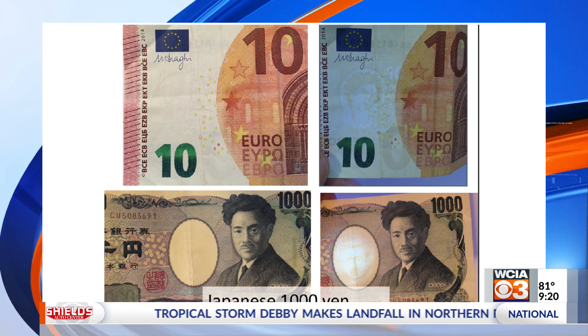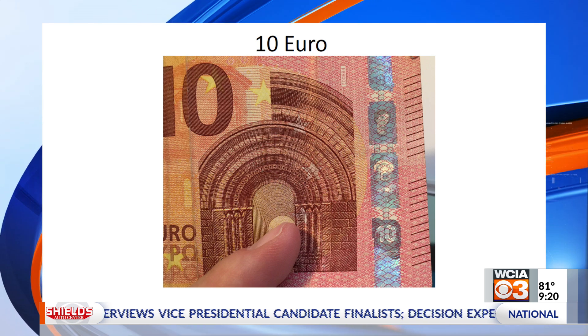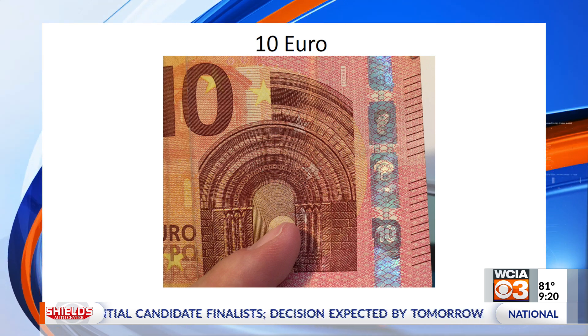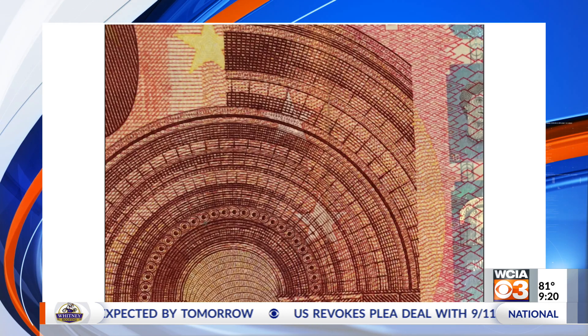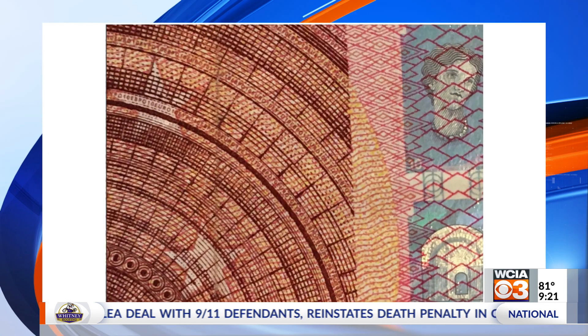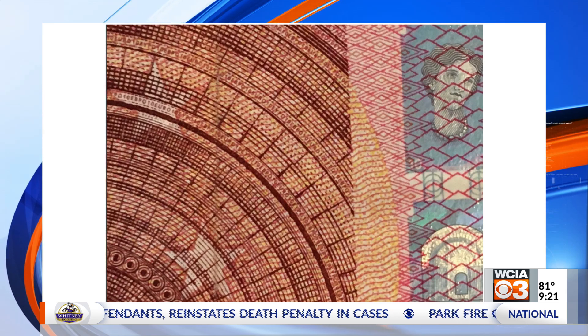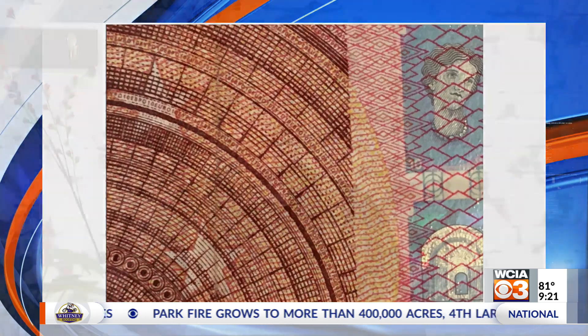Another way to make currency harder to copy is to make it very complicated with very fine structure in the actual printing. For example, this 10 euro — if you zoom in and make it bigger, you can see very fine printing, even lettering, that would be very difficult to manufacture on your own. You might say: why not just use a great printer to copy that?